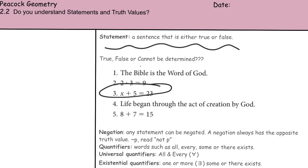There are quantifiers that we also use, such as all, every, some, or there exists. A universal quantifier means all and every. Universally, this applies. Existential qualifiers - one or more, or there exists.